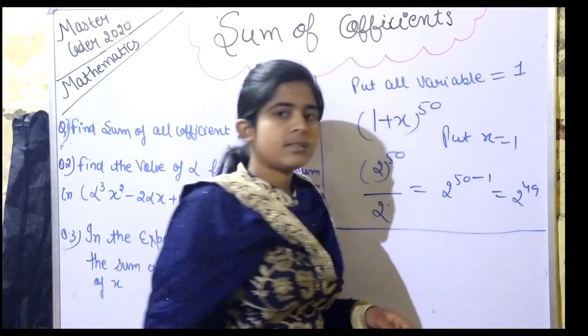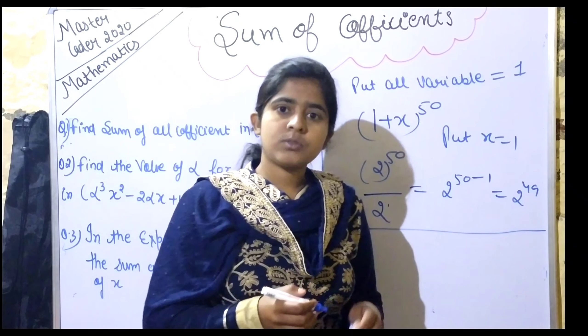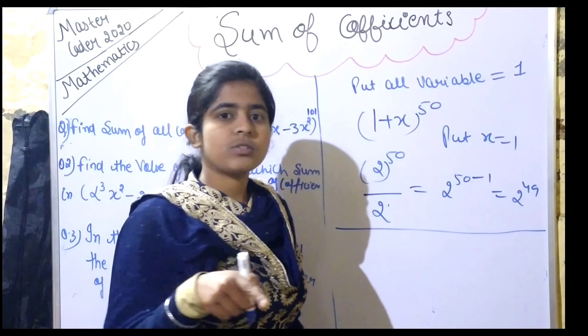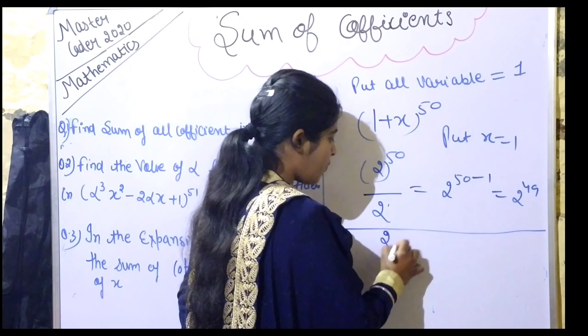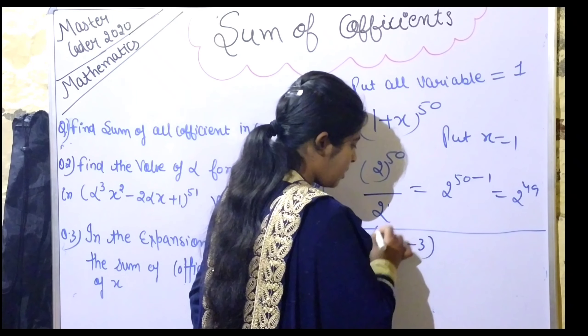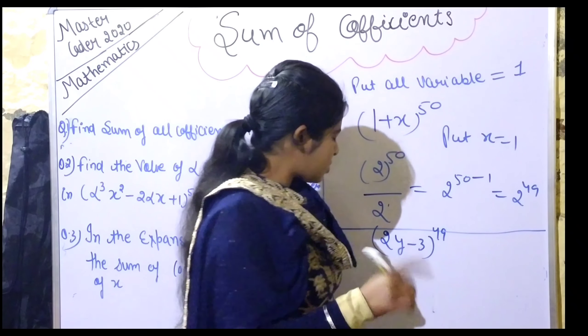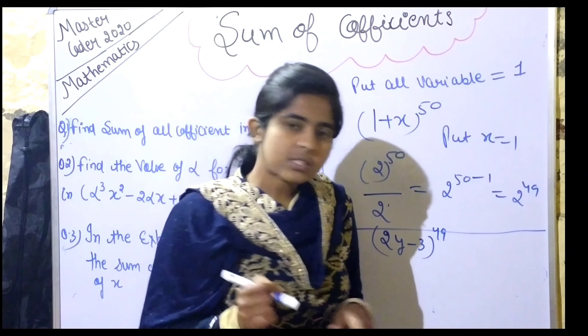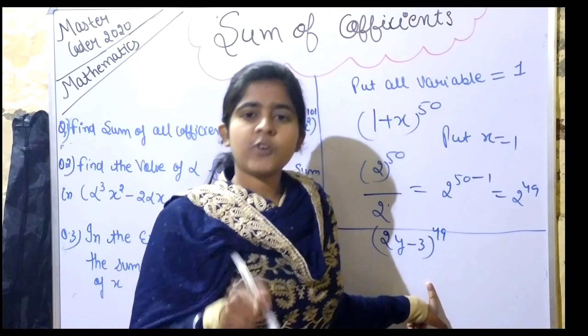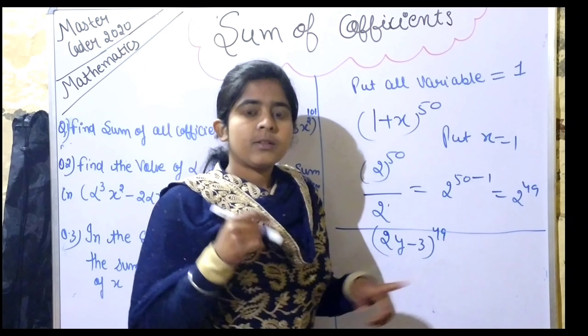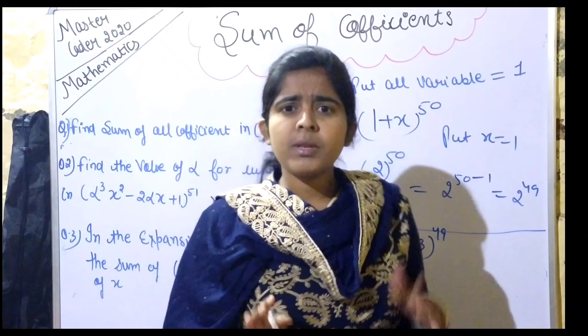Half of 2^50 gives us 2^49. So this will be the sum of coefficients containing odd powers of x. Now I'm giving you a question to answer in the comment box: find the sum of coefficients for (2/(-3))^49.